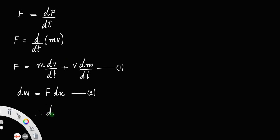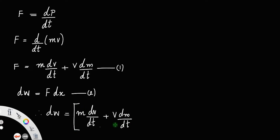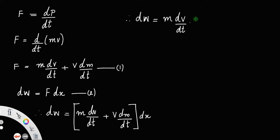Therefore, dw is equal to — instead of force, you can write the whole term — that is m dv/dt plus v dm/dt, times dx. You can multiply dx with each of the terms to get m into dv/dt into dx, plus v dm/dt into dx.